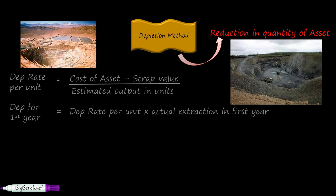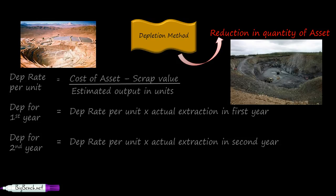You will get the total depreciation for the first year. Next, depreciation for second year equals depreciation rate per unit times actual extraction of coal in second year, and so on. It's very obvious that the amount of depreciation will differ every year because it's very rare that you will extract exact amount of quantity of coal every year.